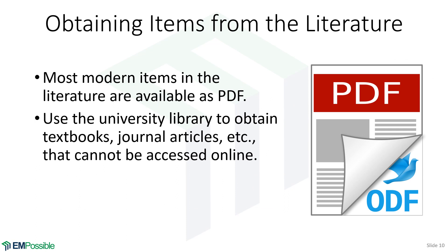How do you obtain things from the literature? Most modern things are available through PDF. If you have access to your library, they'll have access to lots of places where you can get journal articles or even e-books in PDF format. Some older things aren't available in PDF, but lean on your library for that — they can borrow books from other universities, look up older journals, and print those out for you. I love PDFs because I can import those into my notebooks and take notes.